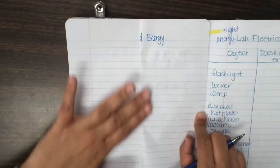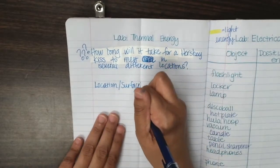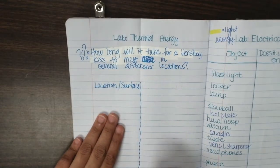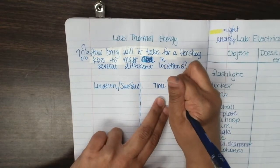And then just take your paper and fold it. So location, surface, and then time to melt.